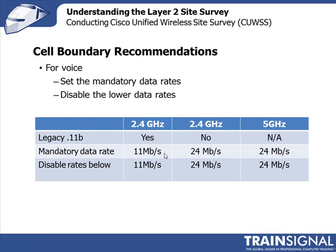Set the mandatory data rate at 11 megabits per second and disable any data rates below 11 megabits per second. If you don't have any legacy 802.11b devices operating, then you can set your mandatory data rate at 24 megabits per second and disable any data rates below 24 megabits per second. You would do the same thing in the 5 gigahertz band.